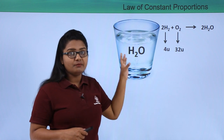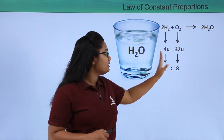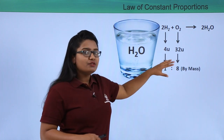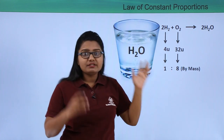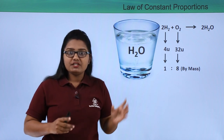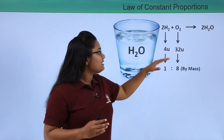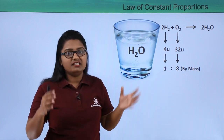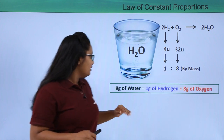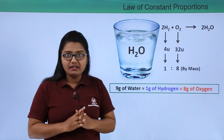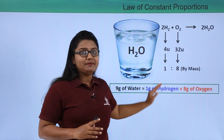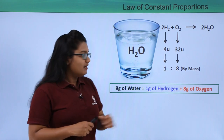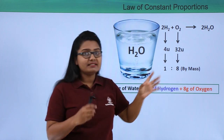When we find the ratio of hydrogen to oxygen present in water, we see they are present in the ratio 1:8 by mass. This means whatever the source of water, hydrogen and oxygen must always be present in the ratio 1:8. For example, in 9 grams of water, 1 gram must be hydrogen and 8 grams must be oxygen.